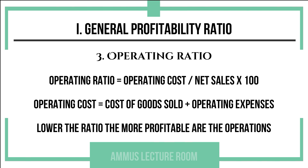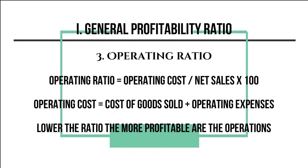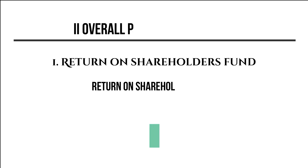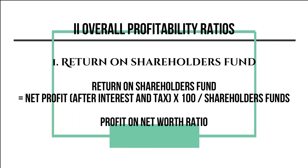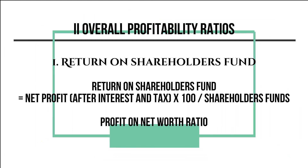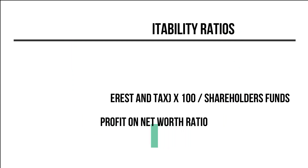The operating ratio equation is: operating cost divided by net sales, multiplied by 100. Operating cost equals cost of goods sold plus operating expenses. A low operating ratio indicates the firm's operations are more profitable. The return on shareholders' fund is calculated as: net profit after interest and tax multiplied by 100 divided by shareholders' fund. This is also called the profit on net worth ratio.